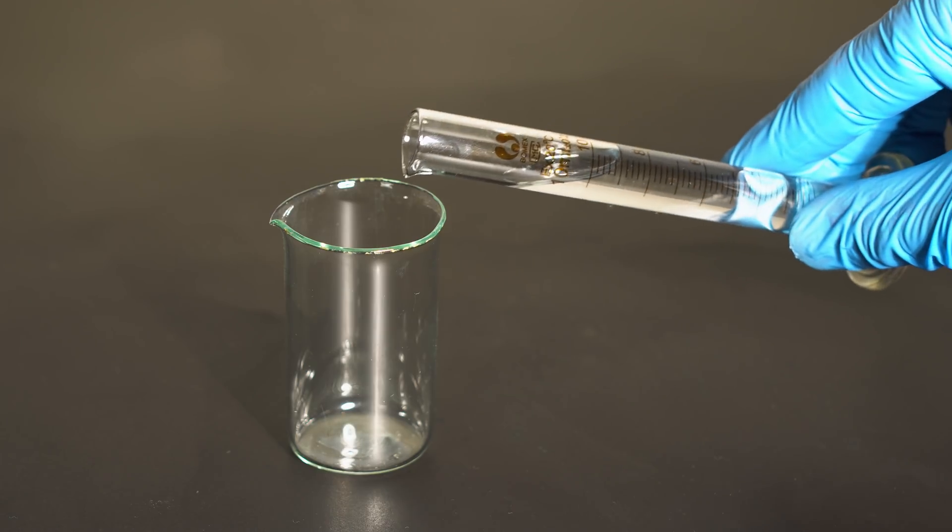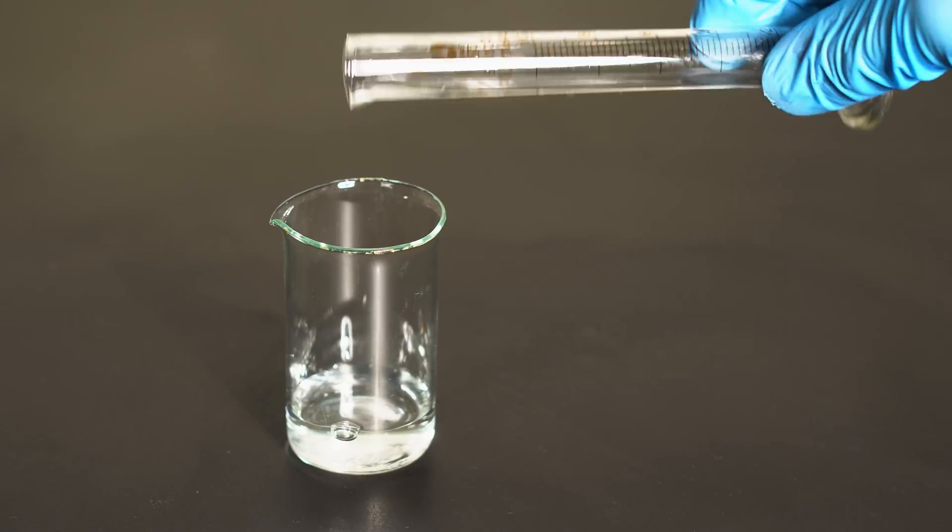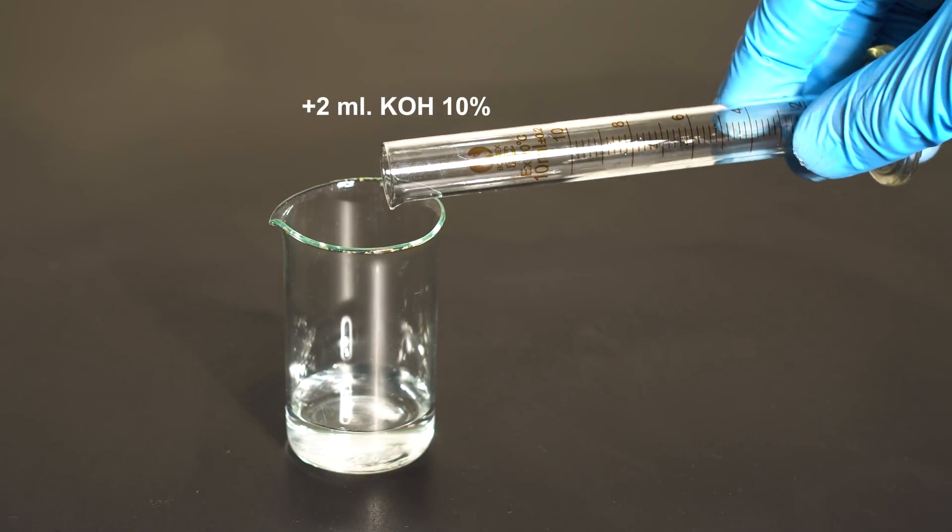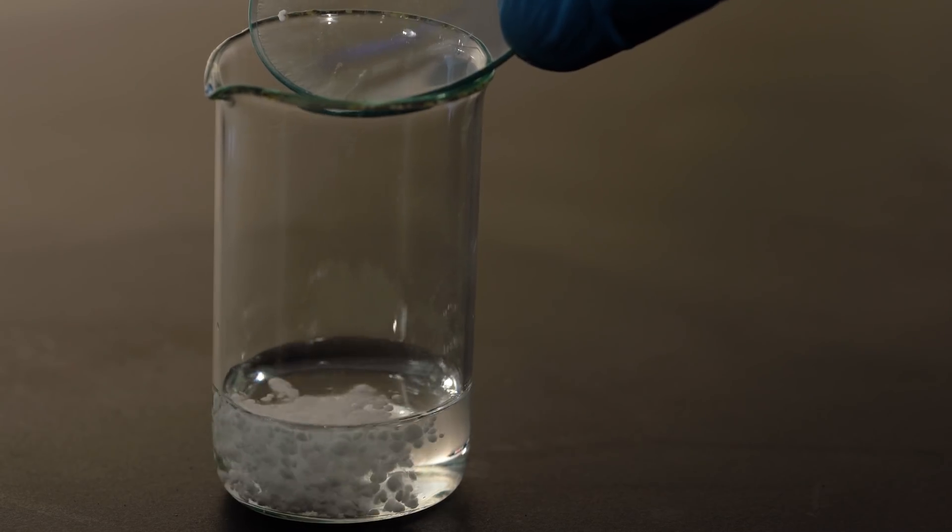Then I'll prepare another solution. For this one, I'll dissolve one gram of sodium borohydride, adding a couple milliliters of 10% potassium hydroxide beforehand for the hydrolysis inhibition of sodium borohydride.